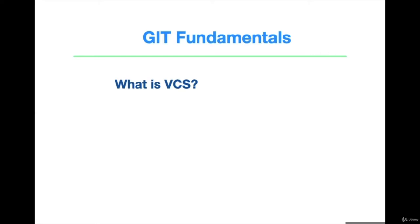Now let's see what is the difference between Git and GitHub. Git is the tool to track your changes. But GitHub is where the codes are hosted and can be shared among different stakeholders.